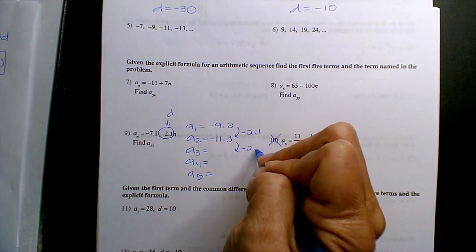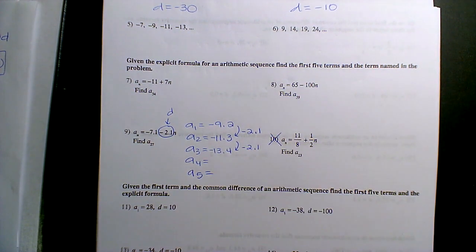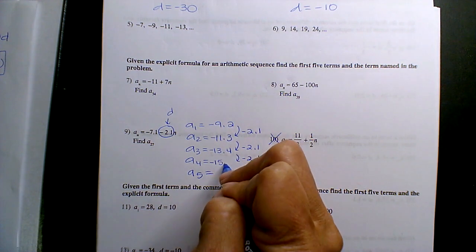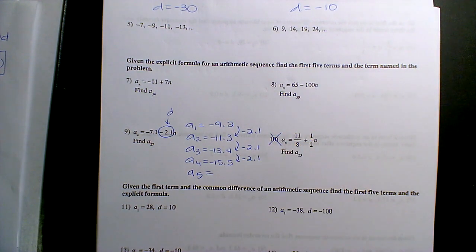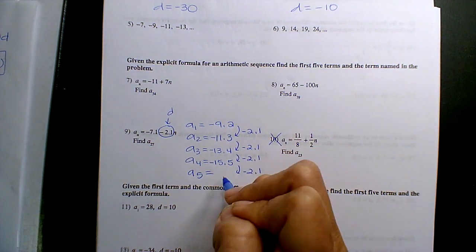If I go down negative 2.1 again, I get negative 13.4. Bless you, right? If I go negative 2.1 again, I get negative 15.5. Yeah? I mean, you can throw it in the calculator if you like, or you can just...